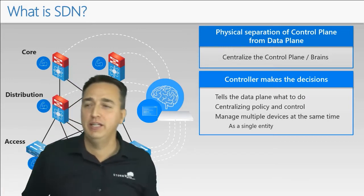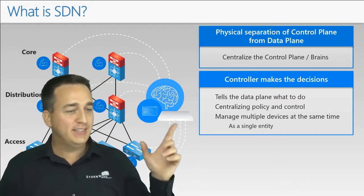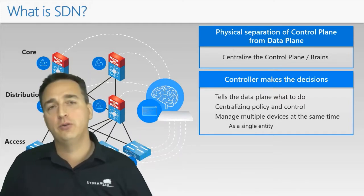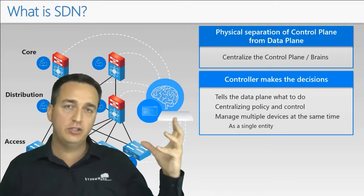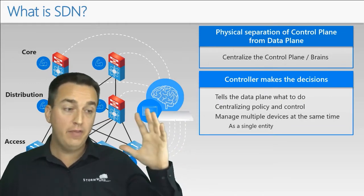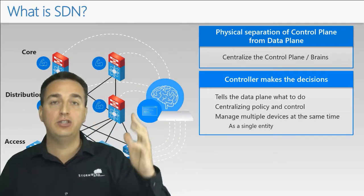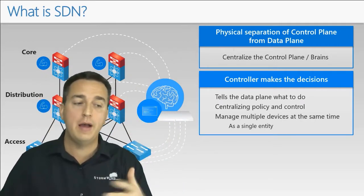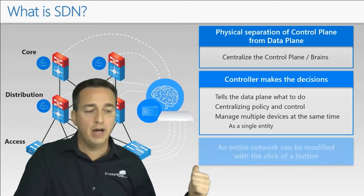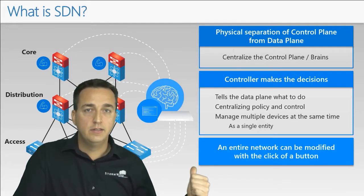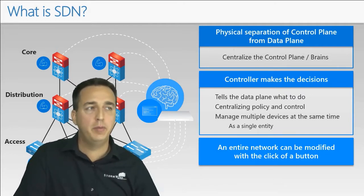Let's hope that doesn't happen to you, but that's the worst case scenario. In this example, we use our controller. We spend the time to create the policies and the changes that need to be made, then we execute it, and all the devices get adjusted at the same time. If I need to roll all that back, I do it right there. An entire network can be modified — or rolled back — with the click of a button.